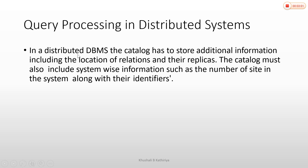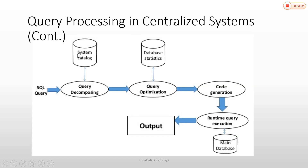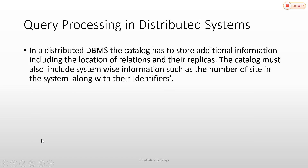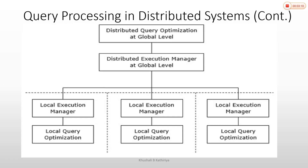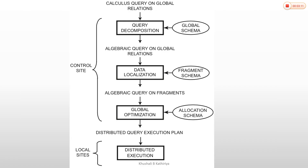The catalog must include system-wide information such as the number of sites in the system along with their identifiers. The steps for distributed query processing are the same as in a centralized system: first, query decomposition; second, data localization; third, global optimization; and fourth, distributed execution.